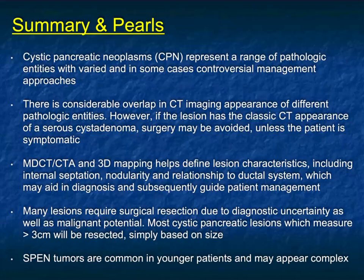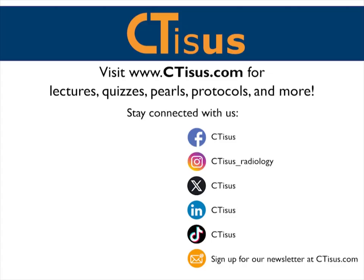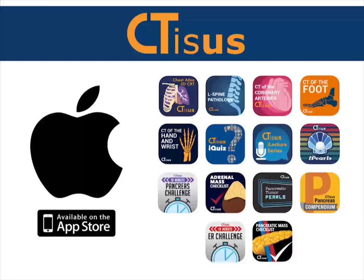If you need to see lots of cases, go to CTSS, go to the pancreas section — you'll see lots of cystic pancreatic neoplasms. With that, part six is over, and I hope everybody has a great day. If you like this video, make sure to subscribe to the CTSS YouTube channel. You can also visit us at ctss.com for more videos plus quizzes, pearls, protocols, and much more. We're also in the App Store with well over a dozen apps for iPhone and iPad, all completely free. Thanks for watching.